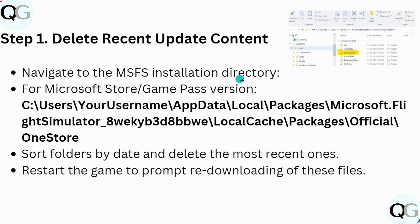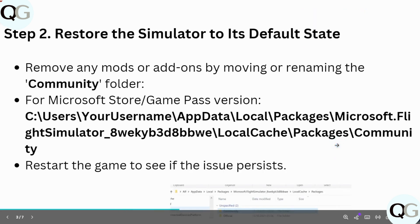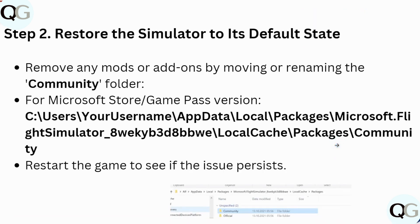First of all, delete your recent update content. Navigate to the Microsoft Flight Simulator installation directory — for Microsoft Store, this is the Game Pass version. Sort folders by date and delete the most recent ones. Then restart the game to prompt re-downloading of these files.